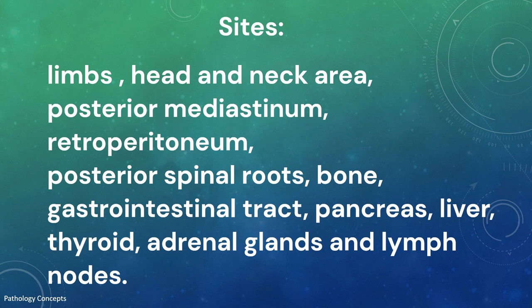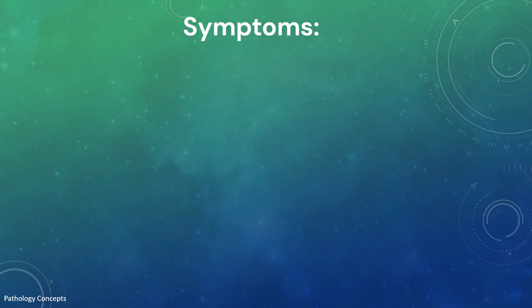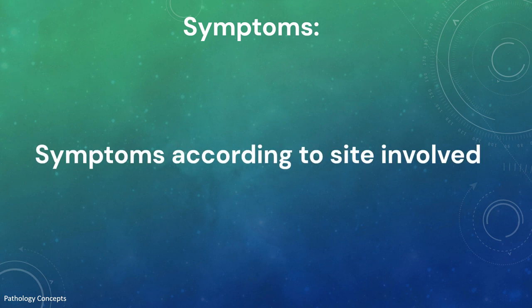The most common site is the limbs, followed by the head and neck area. Deeper sites involved are the posterior mediastinum and retroperitoneum. Other areas include posterior spinal roots, bone, GI tract, pancreas, liver, thyroid, adrenal glands, and lymph nodes.